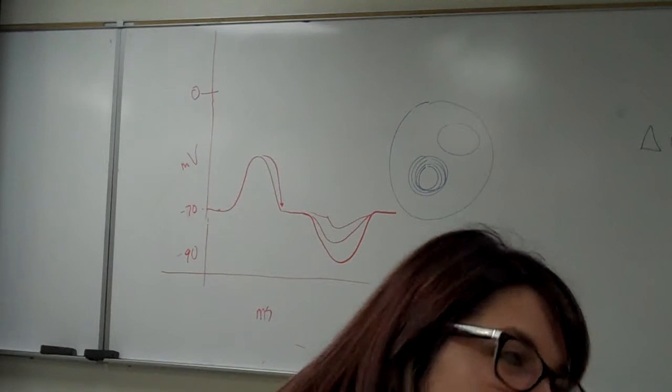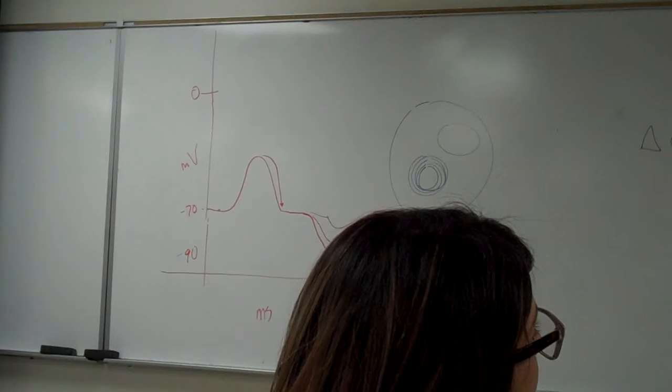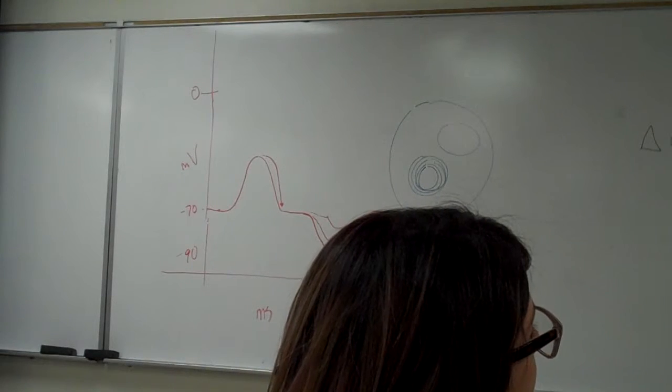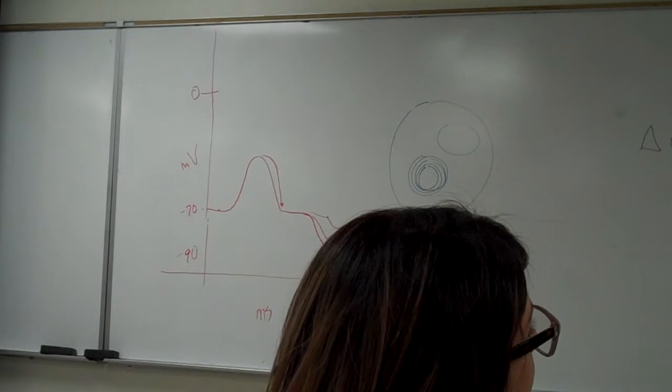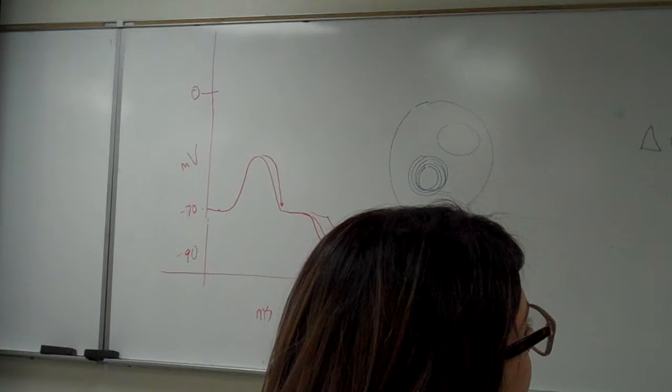Where do action potentials occur? Axons of neurons. Aside from neurons? Aside from neurons. Muscle cells? Yes. Right? I hope that's on your answer.